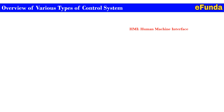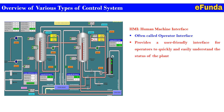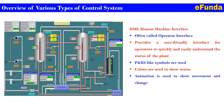One can refer to the screen to see how the interface is managed through graphics, where various multiple equipment are shown with connecting piping and instrumentation — often called the operator interface. This provides a user-friendly interface for operators to quickly and easily understand the status of the entire plant. P&ID symbols are used, colors show the status of equipment and instruments during operation, animation shows movement and changes, and alarm text windows are used for detailing.